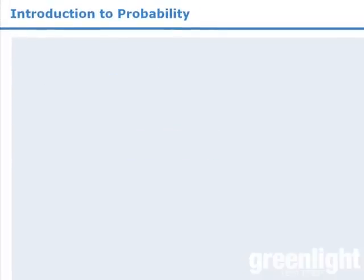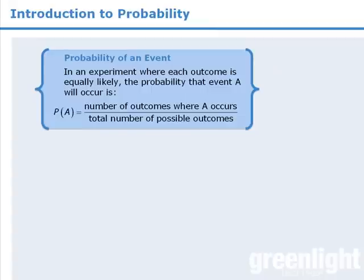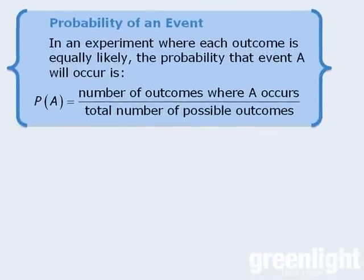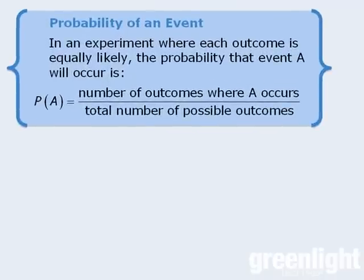Now, when dealing with situations where there are countable outcomes, we can define the probability of an event as follows. If we have a scenario or experiment where each outcome is equally likely to occur, then the probability that some event will occur is equal to the total number of outcomes where that event occurs divided by the total number of possible outcomes.